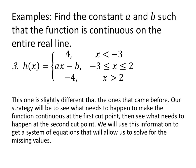This one's a little more challenging. Find the constants a and b such that the function is continuous on the entire real line. Our strategy will be to see what needs to happen to make the function continuous at the first cut point, when x is negative 3, then see what needs to happen at the second cut point of x equals 2. We'll get some information from each cut point, and that will allow us to solve a system of equations in order to find a and b.